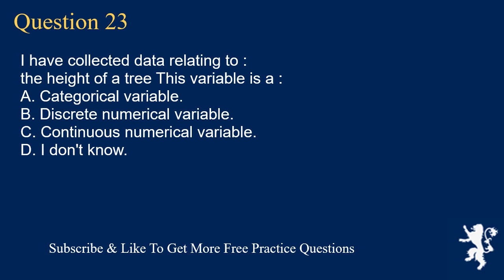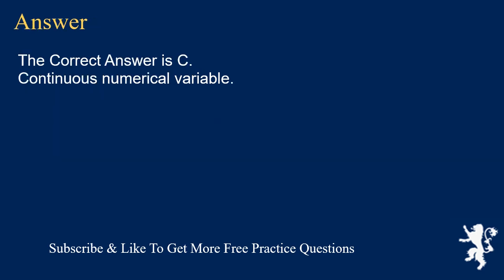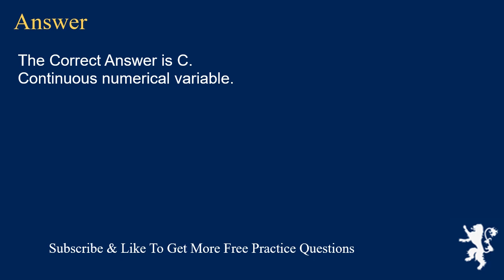Question 23: I have collected data relating to the height of a tree. This variable is A. a categorical variable, B. discrete numerical variable, C. continuous numerical variable, D. I don't know. The correct answer is C, continuous numerical variable.